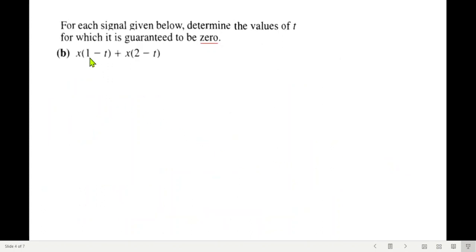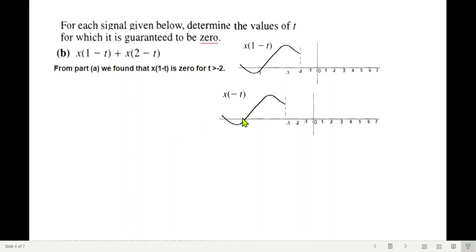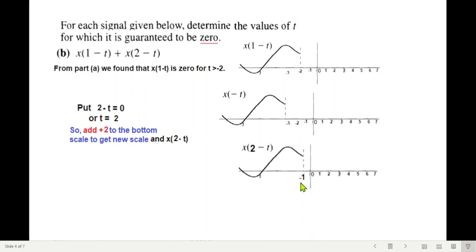Okay, part b. The summation of two signals, both shifted. So we'll use the first one from part a. We got this signal already, it was shifted to negative 2. What about this one? We'll follow the same technique. So this was the shifted signal. We'll shift it now by 2, that it will add 2 with all the scales.